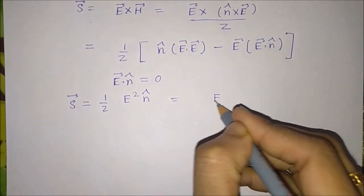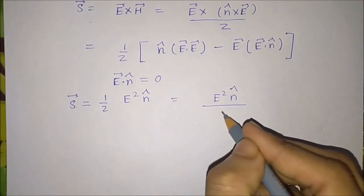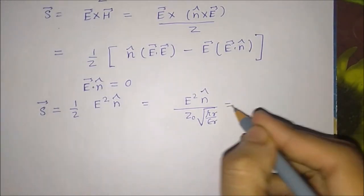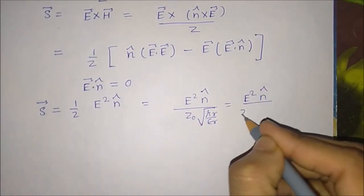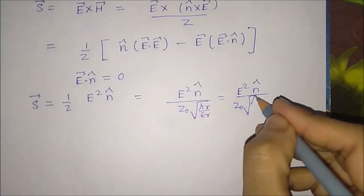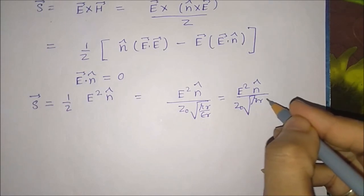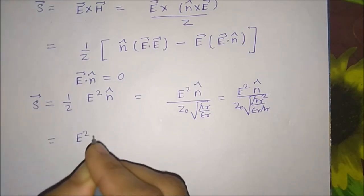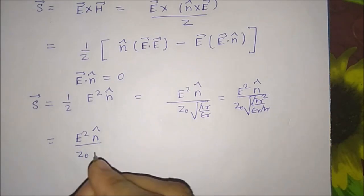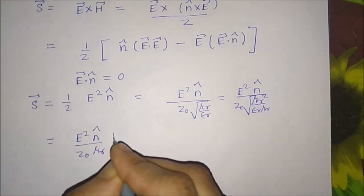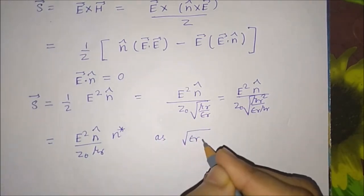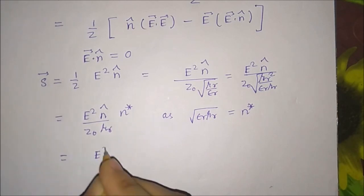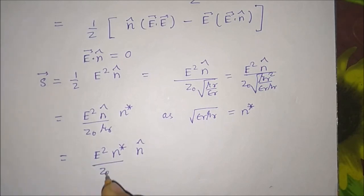Since z equals z₀ sqrt(mu_r/epsilon_r), we can write S equal to E² n̂ / (z₀ sqrt(mu_r/epsilon_r)). Multiplying numerator and denominator by mu_r, this becomes E² n̂ mu_r / (z₀ mu_r sqrt(mu_r/epsilon_r)) equal to E² n̂ / (z₀ mu_r) times sqrt(epsilon_r mu_r). Since sqrt(epsilon_r mu_r) equals n* (the refractive index), S equals E² n* n̂ / (z₀ mu_r).